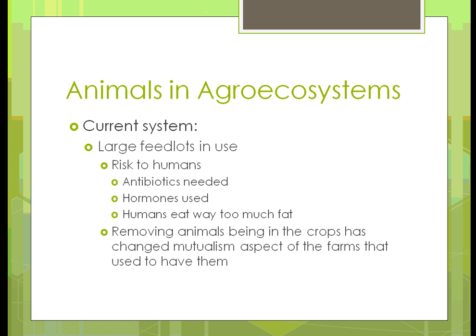The large feedlots are also a risk to humans because they have all the animals in a confined area. They've had to start relying on antibiotics more because one animal will spread disease to another. They've used hormones to make the animals grow faster — the faster they grow, the more money they'll make because they'll be able to put them to market sooner. Also, one of the risks for humans is that we're eating way too much fat, and we should probably be looking at ways to reduce that.